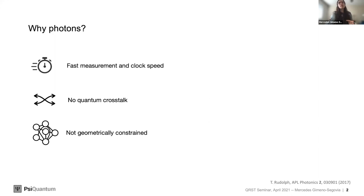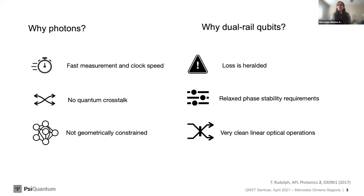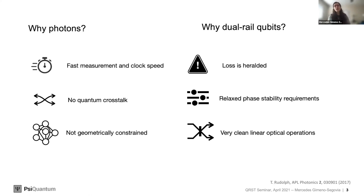Not only do we use photons, but we use a particular encoding: dual rail. Dual rail is especially useful because, as opposed to single rail, loss is heralded — we detect when it happens. Protecting against heralded errors is much easier than against unheralded errors. We can achieve higher thresholds, very clean linear optical operations, and relaxed phase stability requirements.